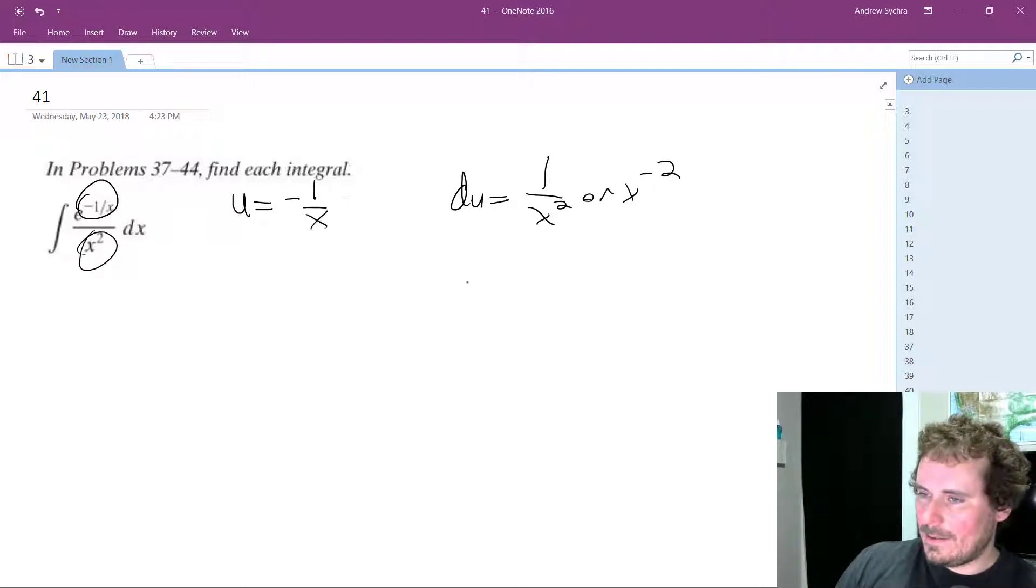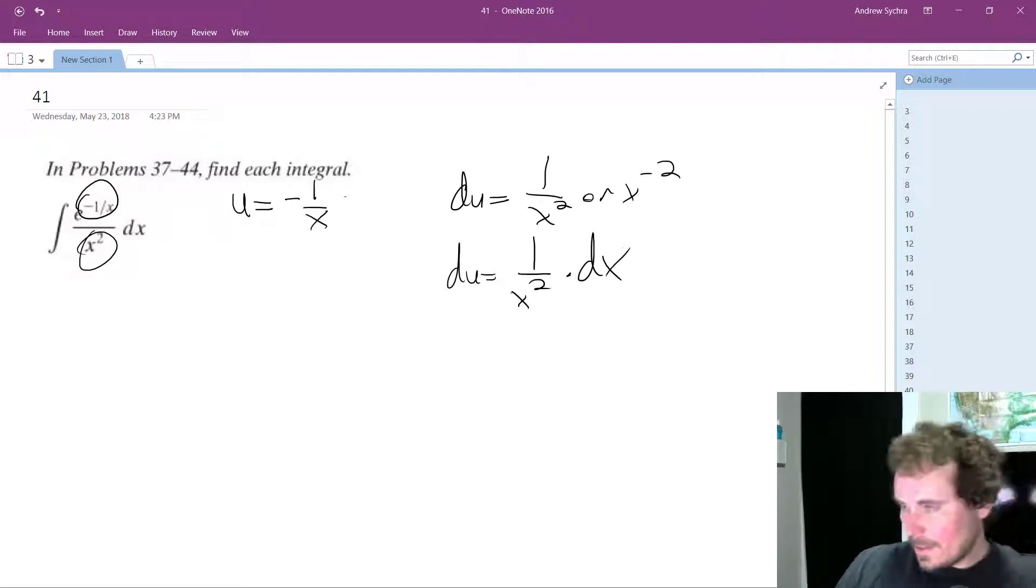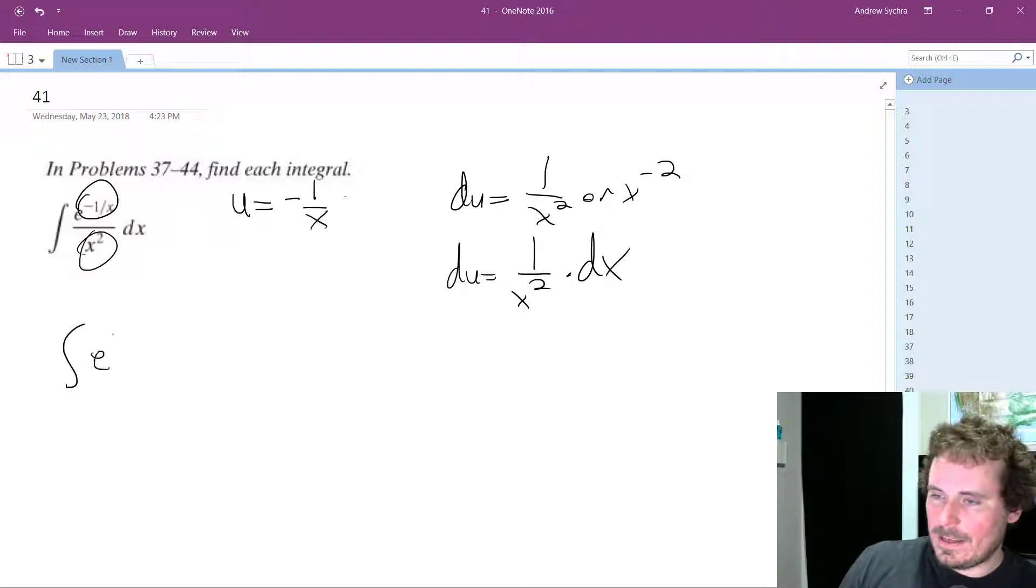And to get du equal to, so du is going to be equal to 1 over x squared times dx. That's how we balance this equation, so that's how we end up with e^u, and then we just have du.